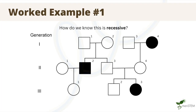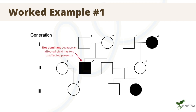In this first worked example, we are asked to determine how we know that the trait displayed in this pedigree is recessive. We can work this out in many ways. For example, we could look at this individual in the second generation who was affected. If the trait was dominant, it would mean this child has a dominant allele, meaning at least one of his parents passed this dominant allele onto him. But both parents do not display the trait and therefore do not carry this dominant allele. Consequently, this trait is not dominant and thus it is recessive.